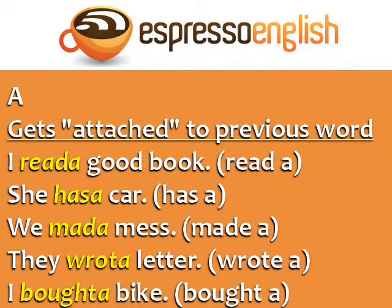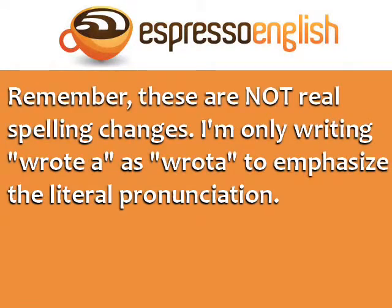The word 'a' often gets attached to the previous word. For example: 'I read a good book,' 'She has a car,' 'We made a mess,' 'They wrote a letter,' 'I bought a bike.' Remember, these are not real spelling changes — writing 'wrote a' as 'rota' is only to emphasize the literal pronunciation.